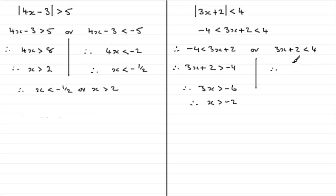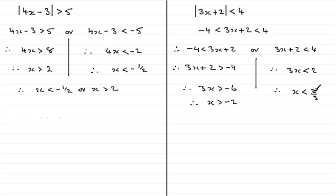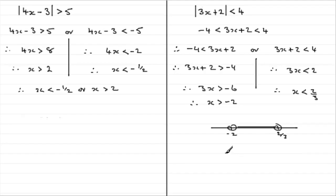For the second inequality, subtracting 2 from both sides gives 3x is less than 4 take away 2, which is 2. Dividing by positive 3, so again don't reverse the inequality, giving x is less than 2 thirds. Bringing these two solutions together: x has got to be greater than minus 2 but less than 2 thirds. On a number line, 2 thirds is up here, minus 2 is down here, and we want all values in between. So x is greater than minus 2 but less than 2 thirds.